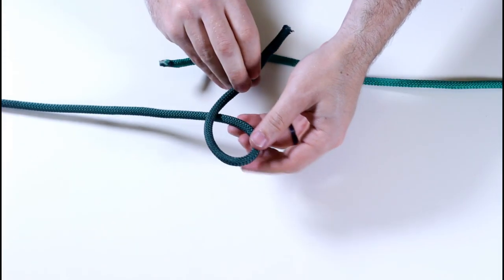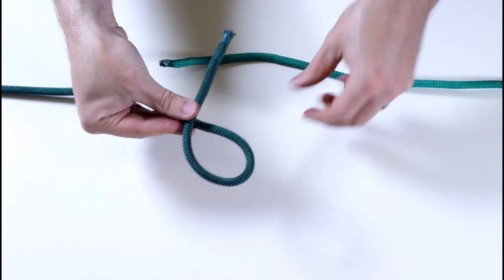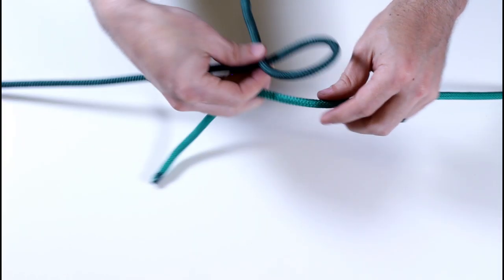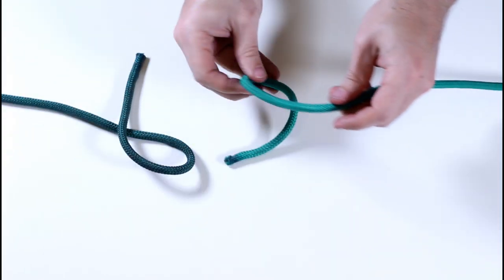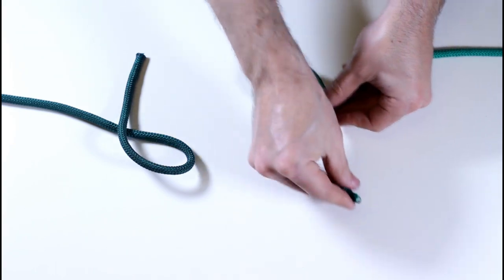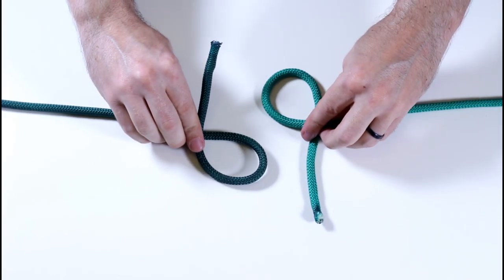With one end, you're going to make a loop in the shape of a six, with the rope passing over itself. With the other end, you're going to make a loop that looks like a nine, with the rope passing under itself. Nice.